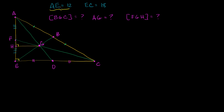We're told that AE is equal to 12 — that's this side right over here — and EC is equal to 18. They've drawn a bunch of the medians here. We know they are medians because when they intersect the opposite side, ED equals DC, CB equals BA, and AF equals FE, meaning F, B, and D are the midpoints. G is the centroid, where the medians intersect.